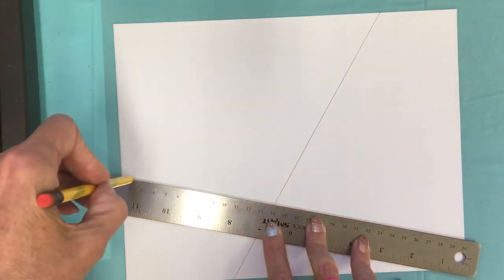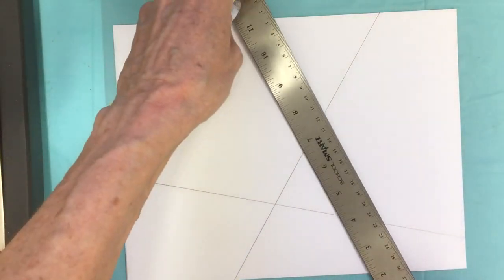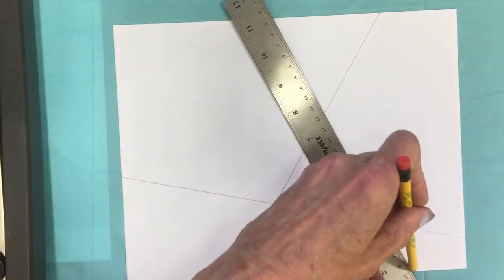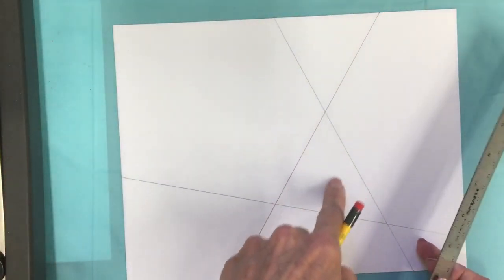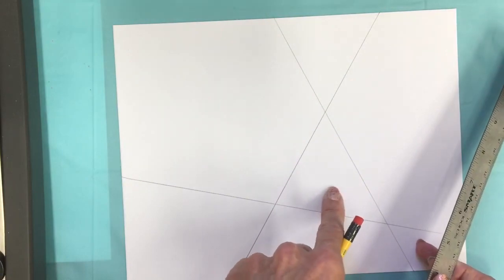So I'm just drawing some long lines that go all the way from one side of the paper to the other. Now what I want to be careful about is the more lines I draw the smaller these shapes get.